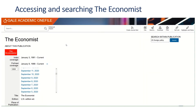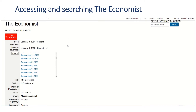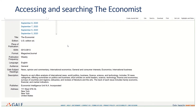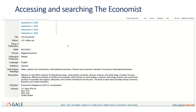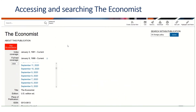We're now within the Gale Academic One File at the homepage for The Economist. Here you get a bit more information about The Economist itself, its coverage, and it tells you that the full text available is from 1988 to the current issue.